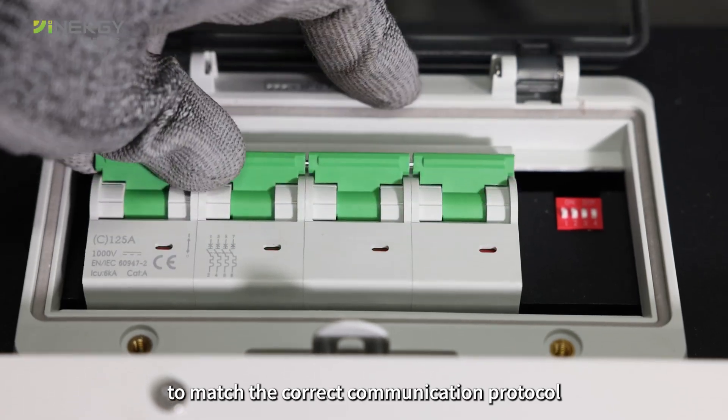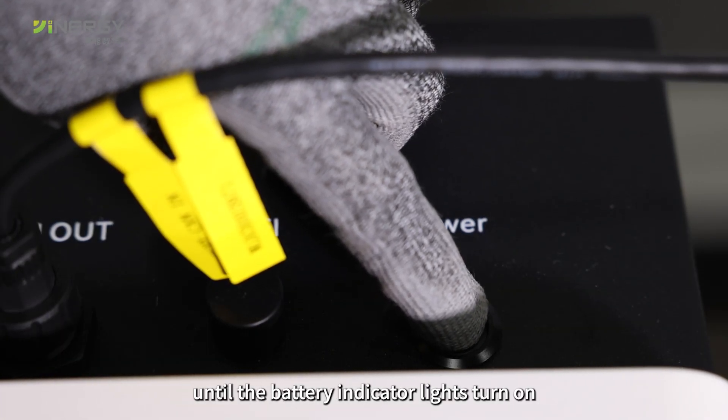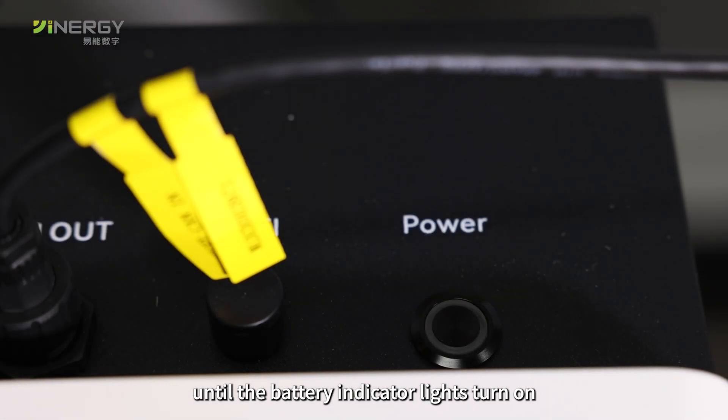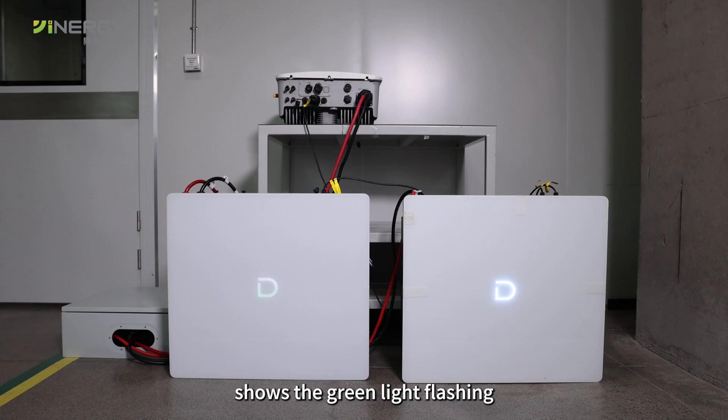Step 6: Long press the power button on both batteries until the battery indicator lights turn on. The D logo on the front panel of the chassis shows the green light flashing, indicating successful battery startup.